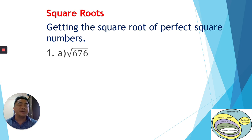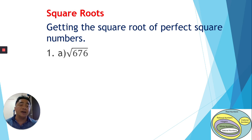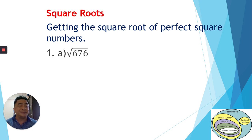We can get perfect square numbers by multiplying the same number by itself — for example, 2 times 2, 3 times 3, 4 times 4, 5 times 5. So 2×2=4, 3×3=9, 4×4=16, 5×5=25, and so on. Now we're going to find the square root.